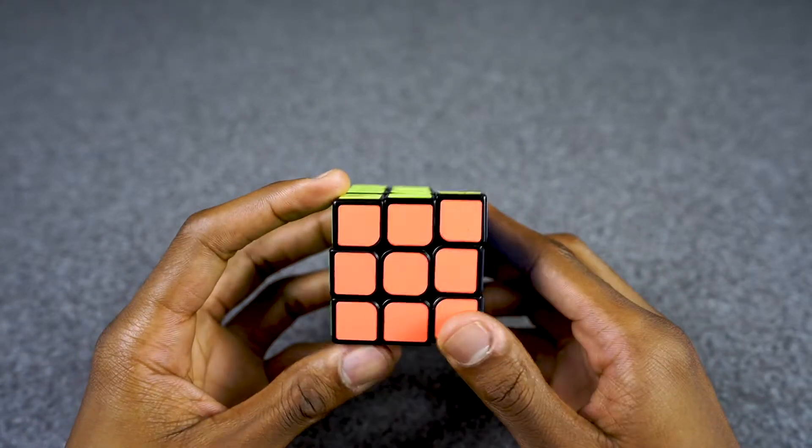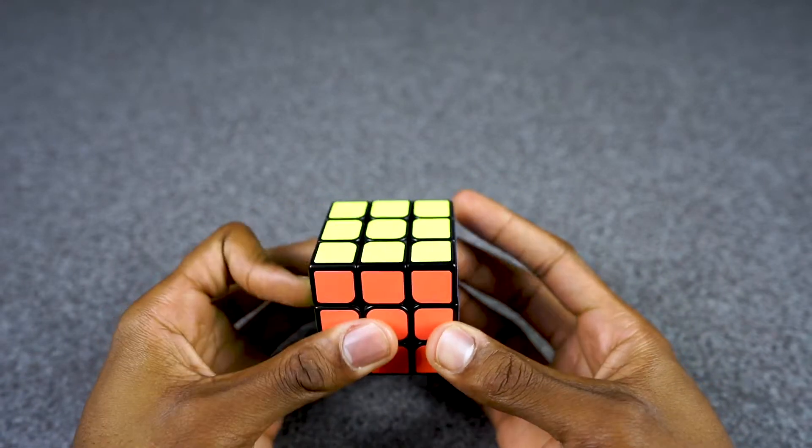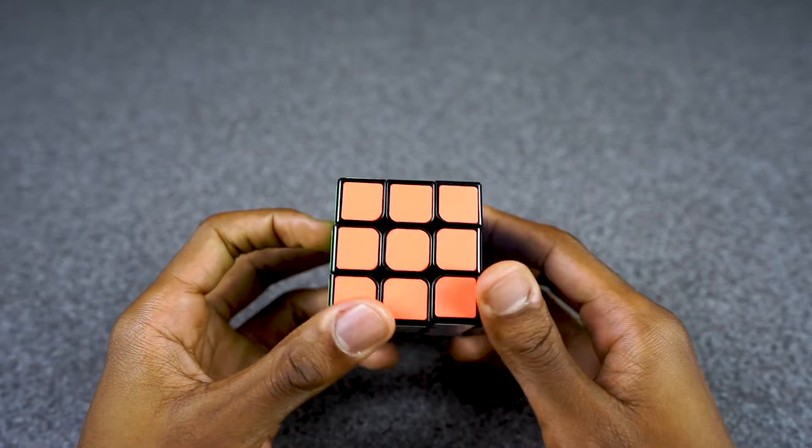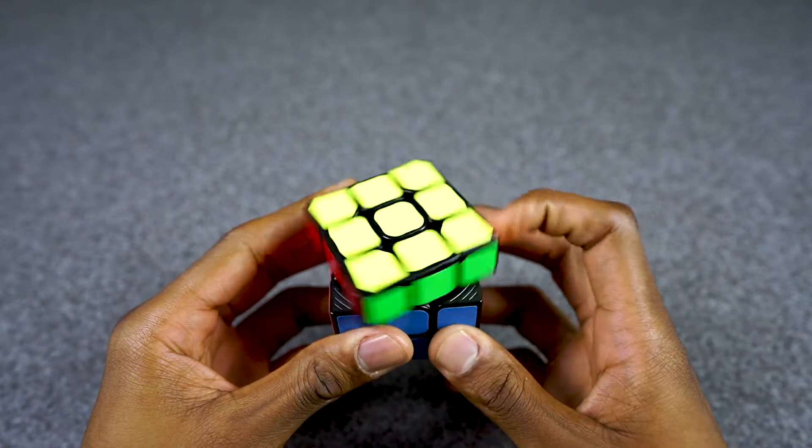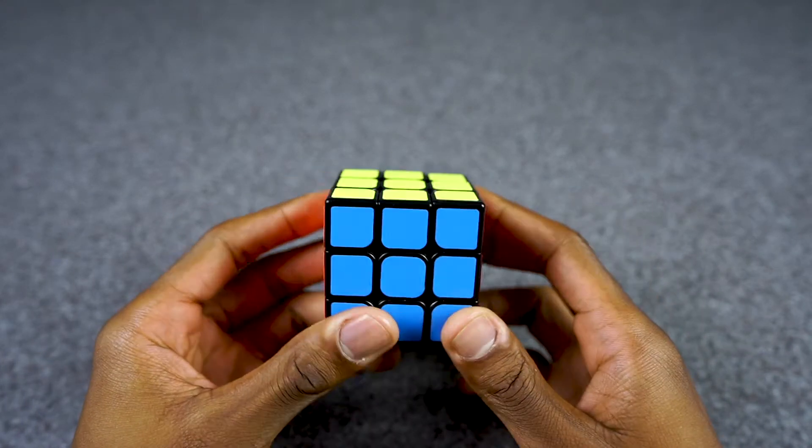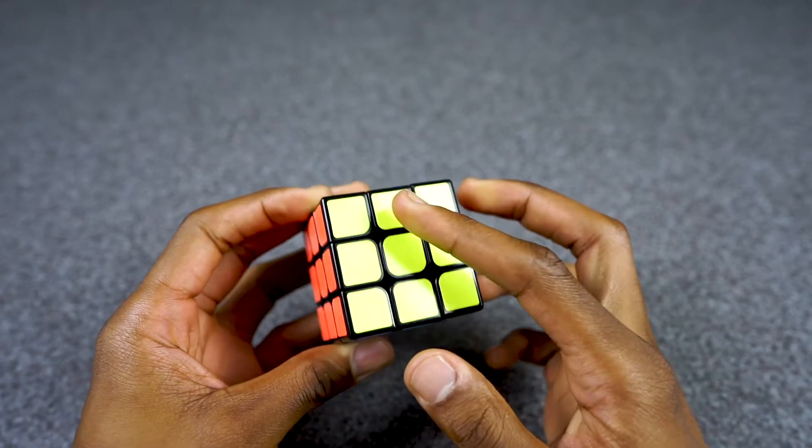We ended with a U prime and we started with a U prime. That's the steps to solving that third layer. The third layer is, like I said before, going to be one of the hardest parts of the cube to solve just because it's more algorithm-based, more memorizing.